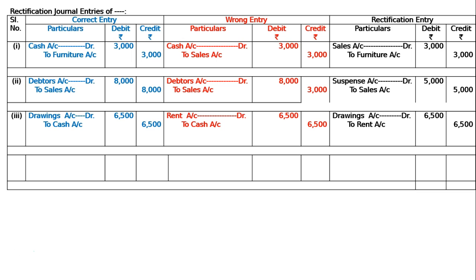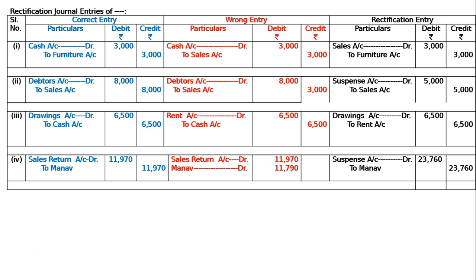Error four — goods worth eleven thousand nine hundred seventy returned by Manav were posted to his debit as eleven thousand seven hundred ninety. The correct entry is sales returns account debited to Manav eleven thousand nine hundred seventy. The sales return side was correct, but Manav should have been credited by eleven thousand nine hundred seventy; instead, he was wrongly debited eleven thousand seven hundred ninety. So the credit and debit cancellation together require crediting Manav by twenty-three thousand seven hundred sixty — that is eleven thousand seven hundred ninety plus eleven thousand nine hundred seventy.